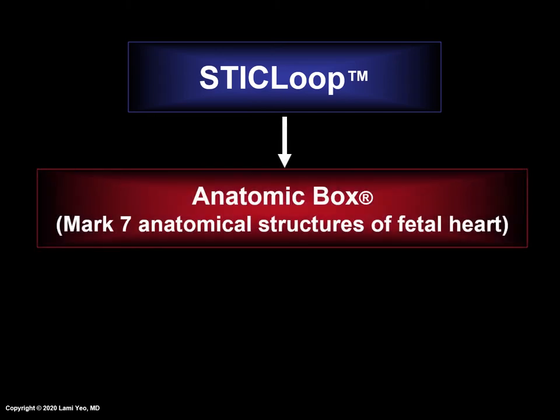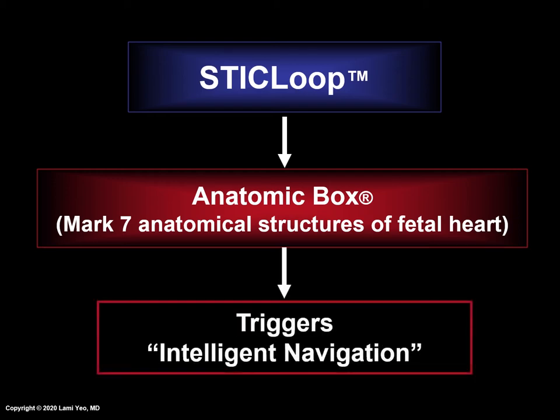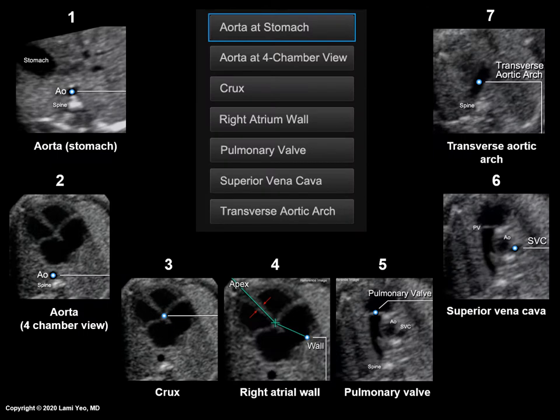As a brief reminder, after a STIC volume has been determined to be appropriate, the next step is to mark anatomical structures of the fetal heart using the Anatomic Box tool. Once marking is completed, this triggers Intelligent Navigation Technology. FINE teaches the user the seven cardiac structures that need to be marked and also where the marking should occur through reference images.